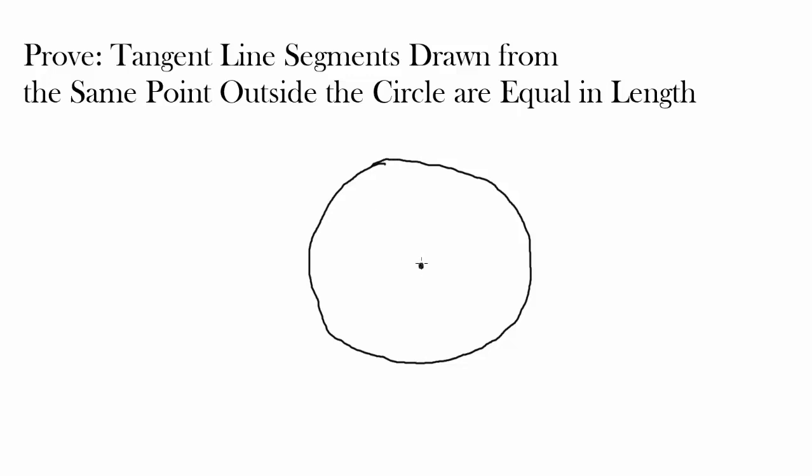So you have a circle, and let's call this the center, and you have a point outside the circle. Let's plot it right here, and you're drawing two tangent lines. You have a first tangent line intersecting the circle right here, extending on. Another tangent line intersecting the circle right here, extending on. And we want to prove that this segment and this segment are the same in length.